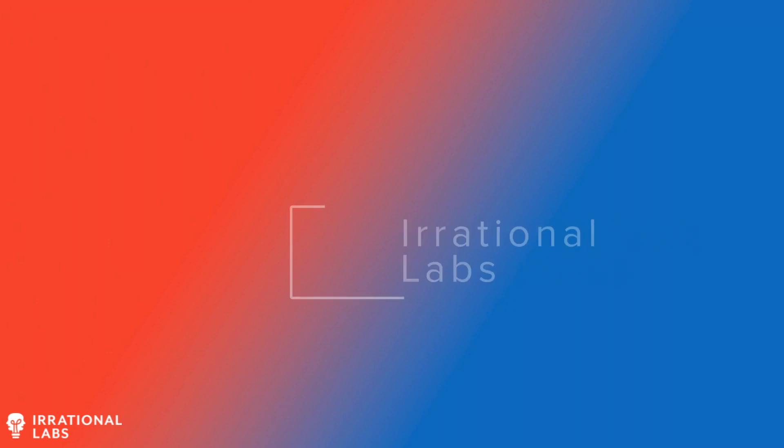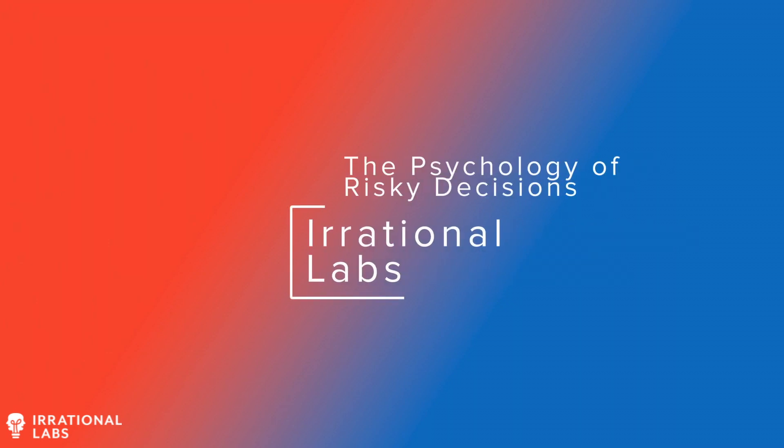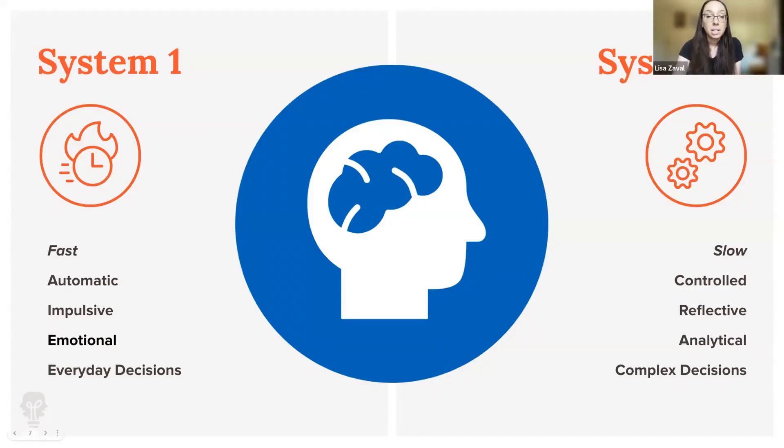The field of psychology has long theorized this distinction between emotional and rational information processing. People have two different systems of receiving and processing information. One, known as System 2, is a very conscious, explicit, more analytic system.